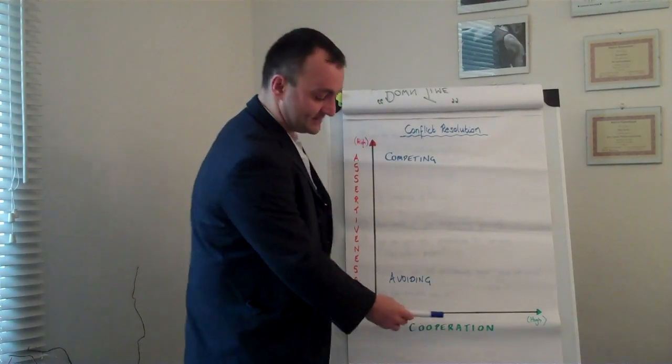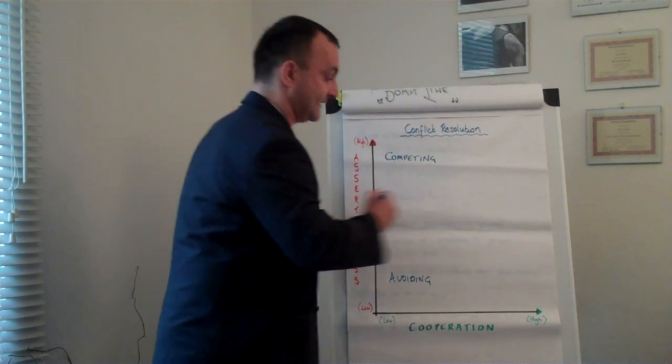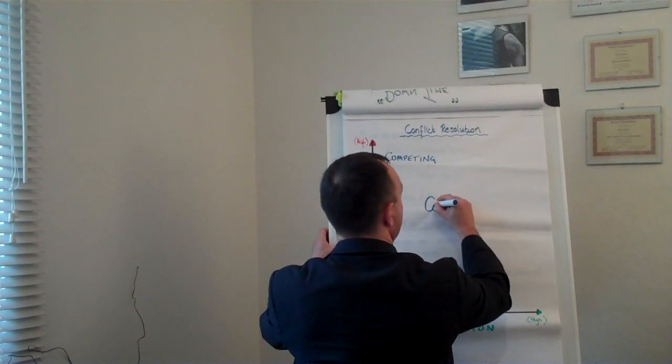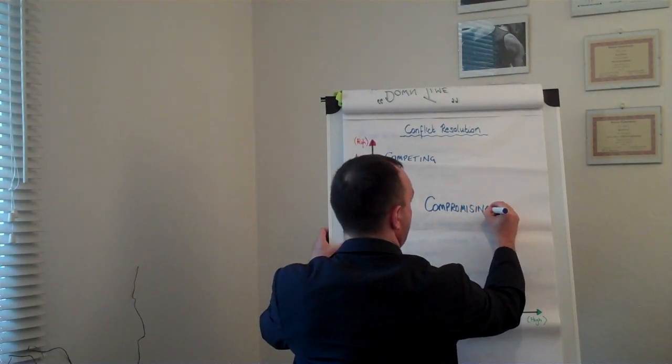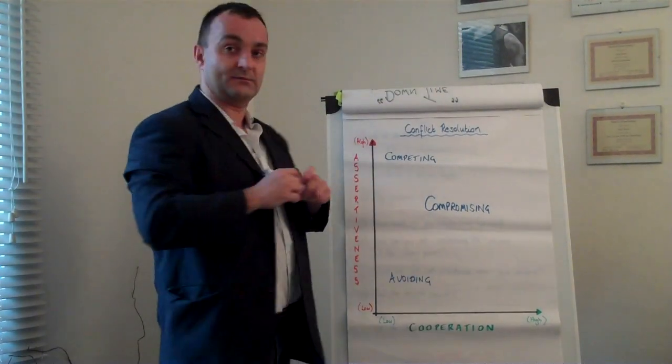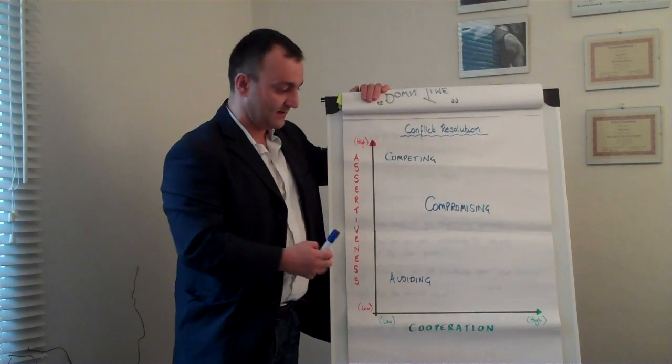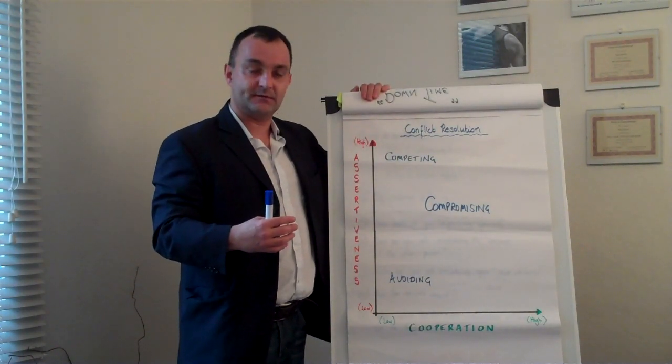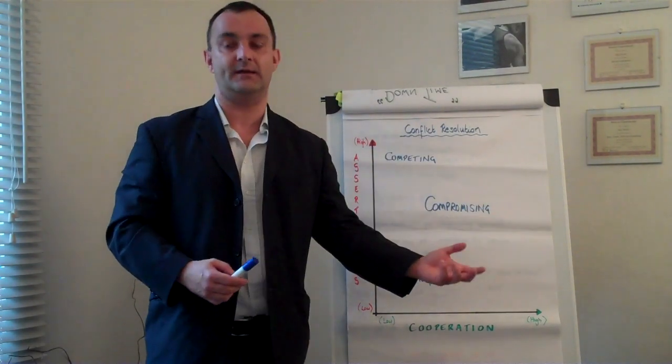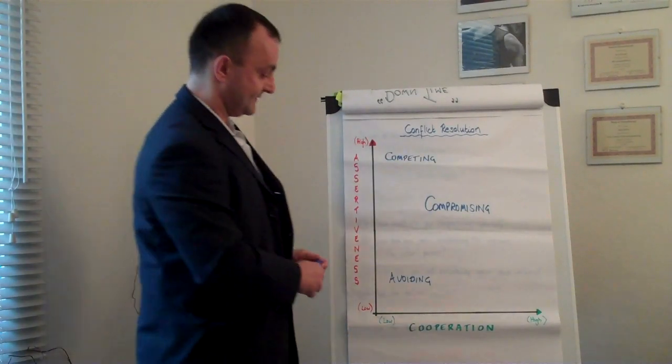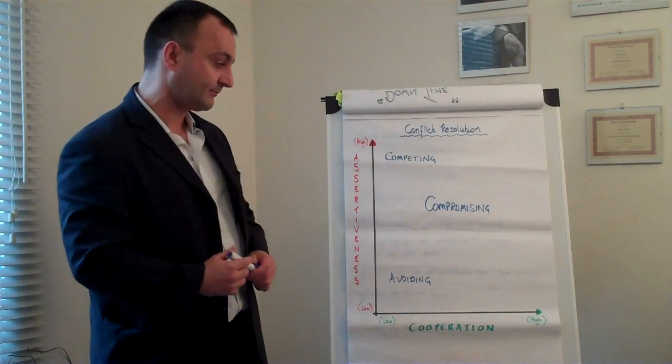Then we have the middle ground with mid-range levels of cooperation and mid-range assertiveness. This is called compromising behavior. We would behave this way when the outcome is really important to us. It's not one of those situations where walking away is as favorable as getting our complete outcome. It's very outcome driven. We want a medium level of assertiveness and a medium level of cooperation.